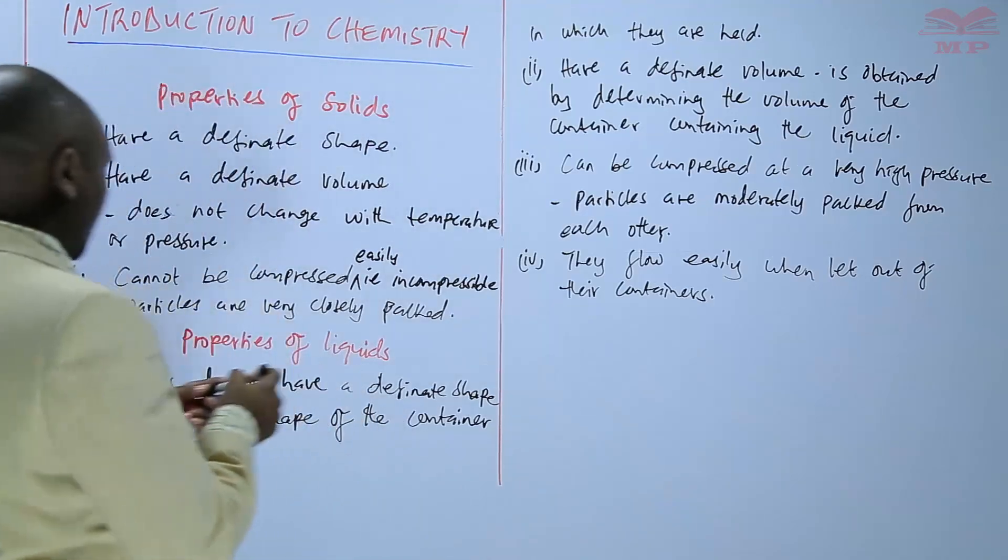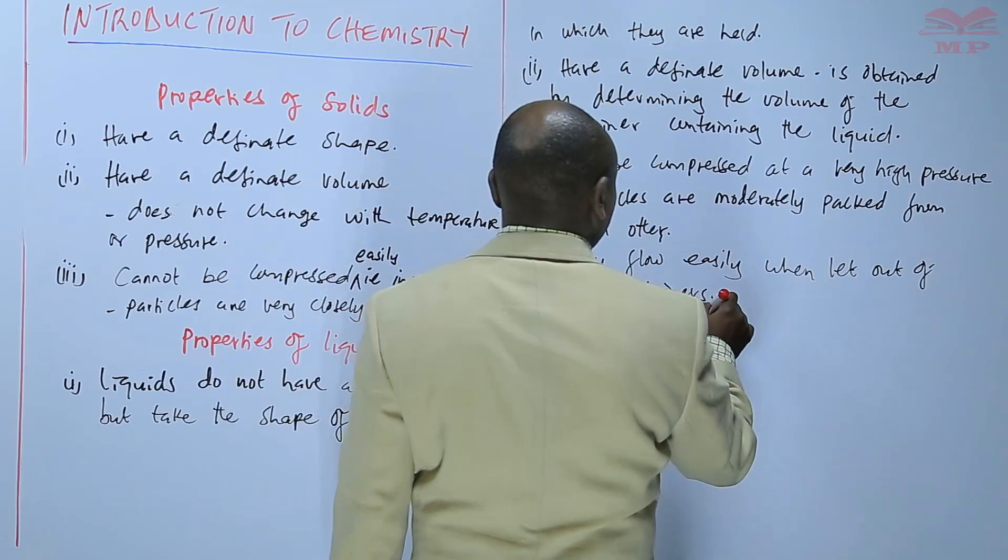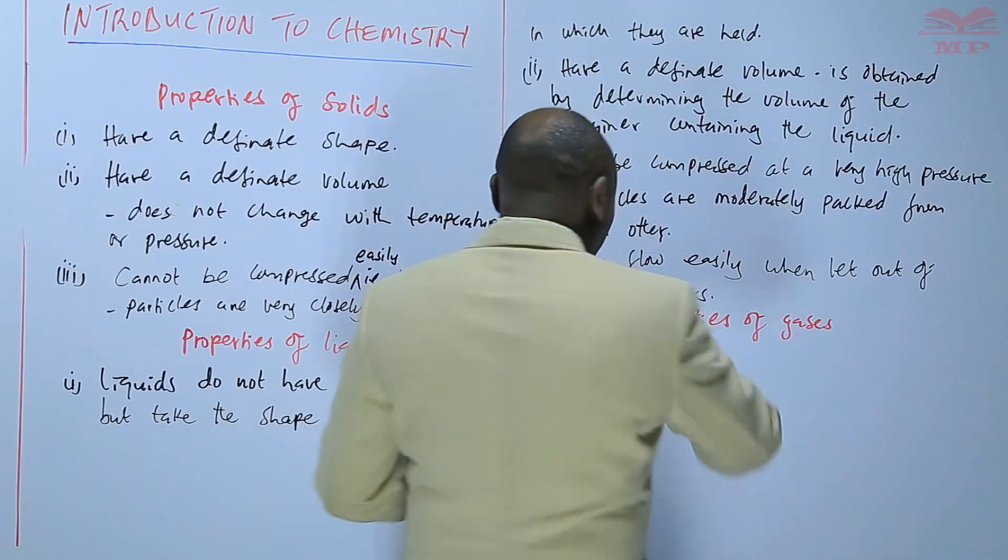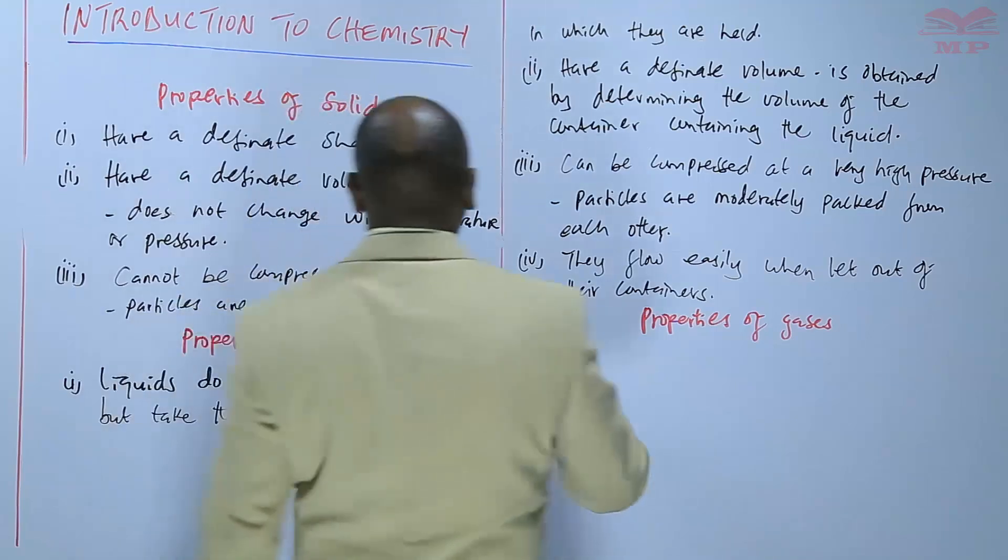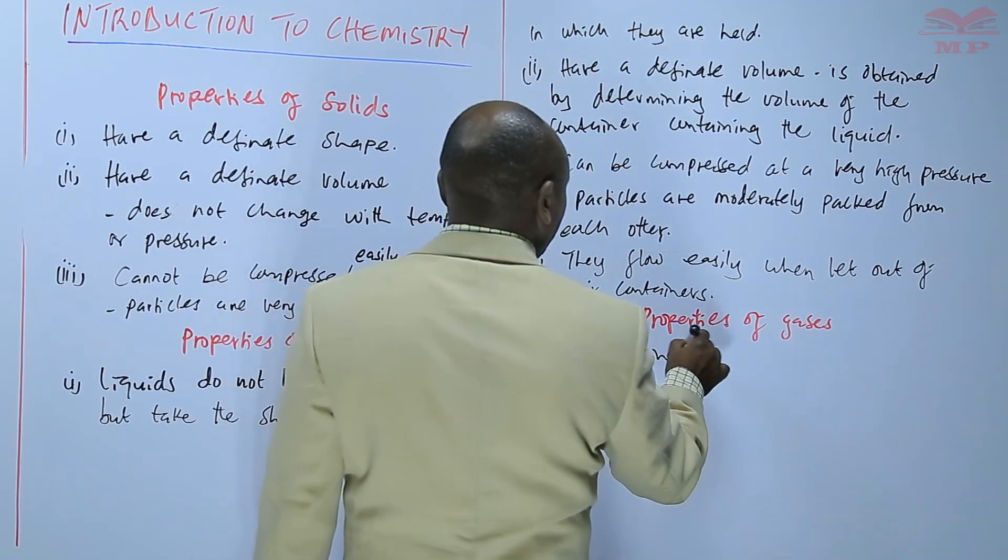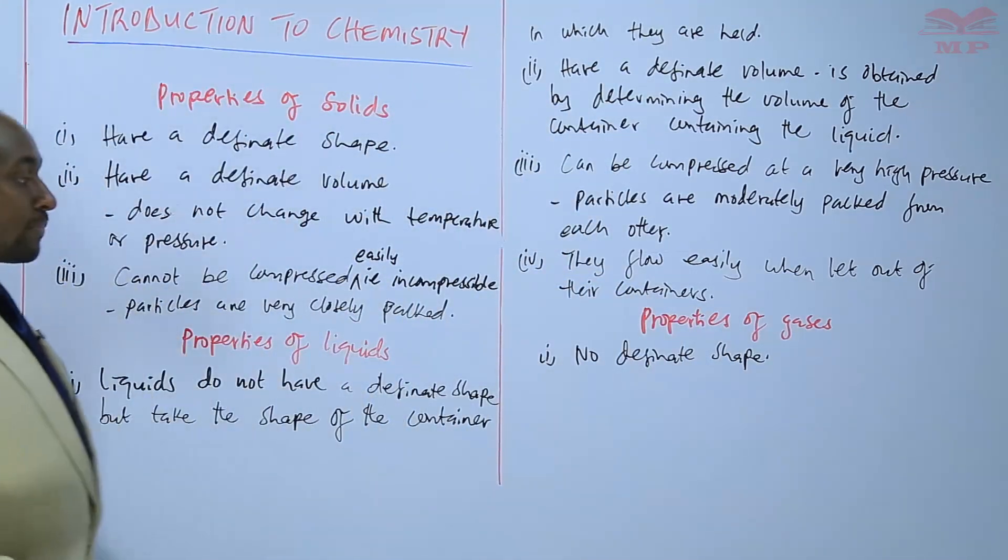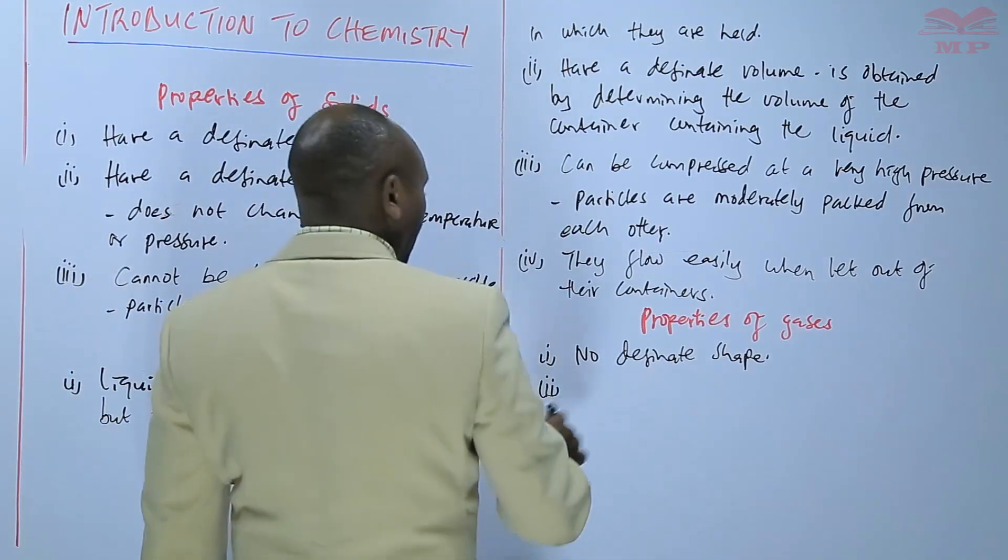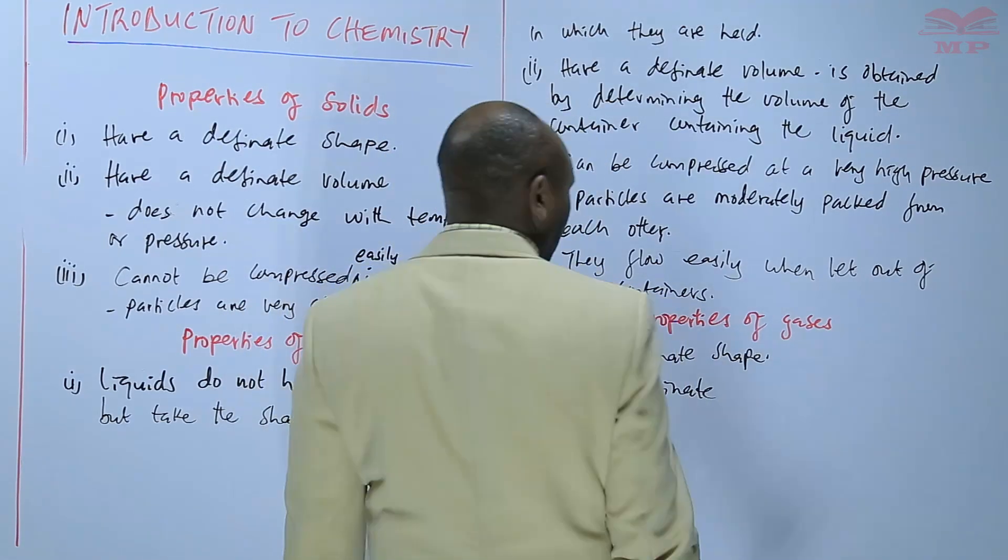Then the other properties that we shall discuss are the properties of gases. One thing about the gases is that they have no definite shape. So we cannot talk of the shape of a certain gas because it will not have a definite shape. Number two, gases also have no definite volume.